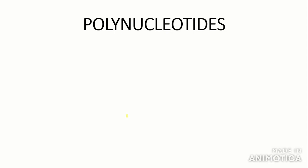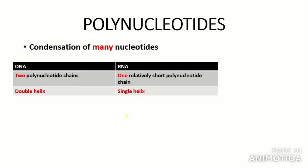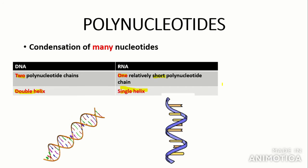Polynucleotides are formed by the condensation of many nucleotides. A key difference between DNA and RNA polynucleotides is that DNA consists of two polynucleotide chains, or two strands, whereas RNA is just one polynucleotide chain and is relatively short. DNA is a double helix while RNA is a single helix, as shown in the diagrams here.